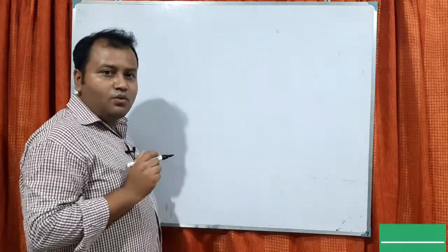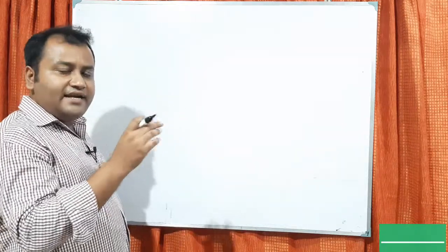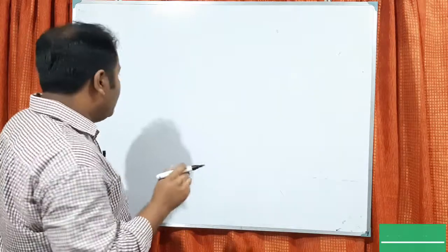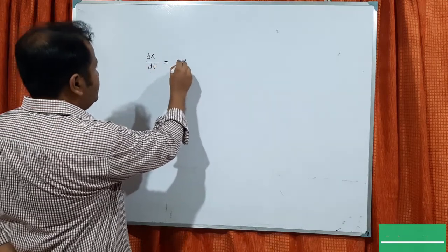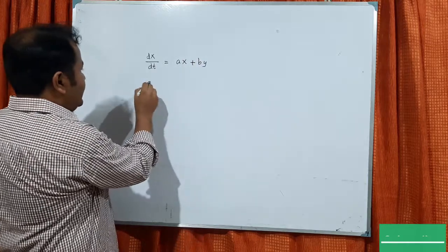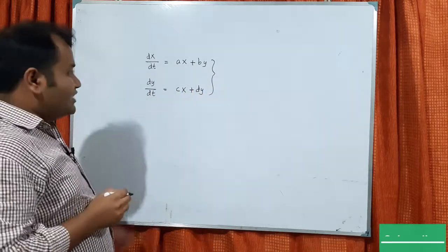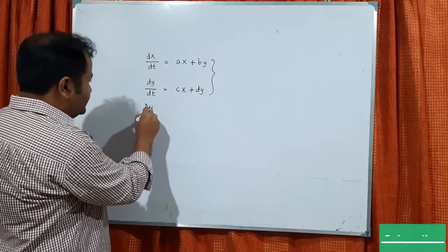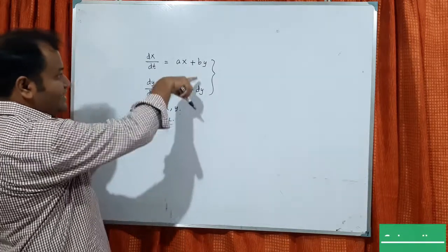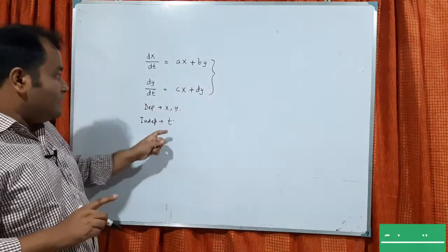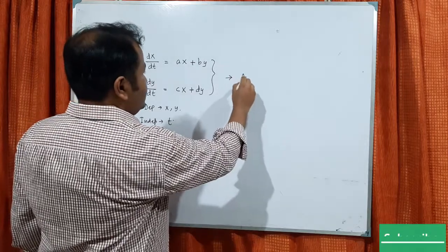There are two kinds of systems: one is called an autonomous system, and another is called a non-autonomous system. In an autonomous system, the independent variable will not appear on the right-hand side explicitly. For example, if dx/dt = ax + by and dy/dt = cx + dy, this is an autonomous system because the dependent variables are x and y and independent variable is t, but t does not appear directly on the right-hand side.